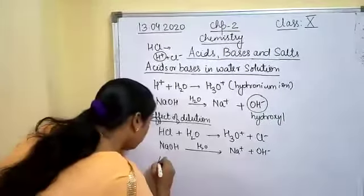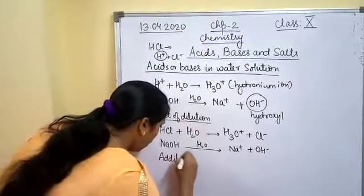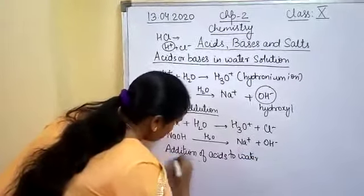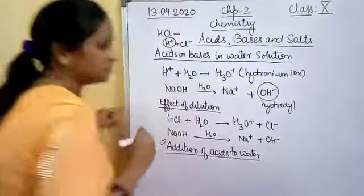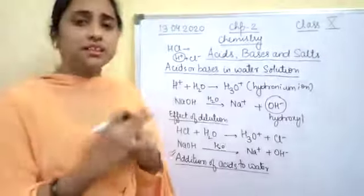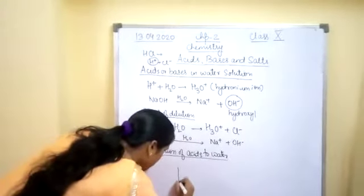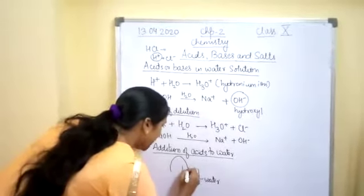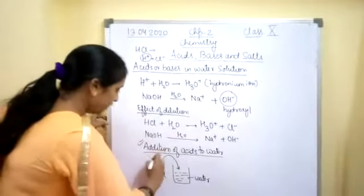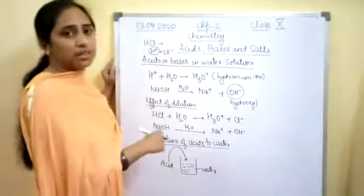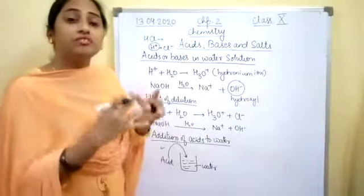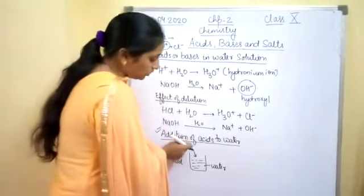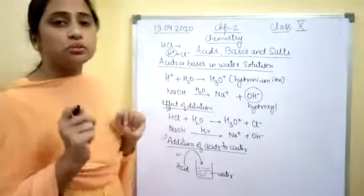An important point is the addition of acids to water. When water is added, the acid gets diluted. If water is present in the beaker, we should always add acid to it. We should never add water to the acid, because that reaction is highly exothermic and an accident may occur. So it is advisable to slowly add acid into the water so that the dilution process takes place safely.